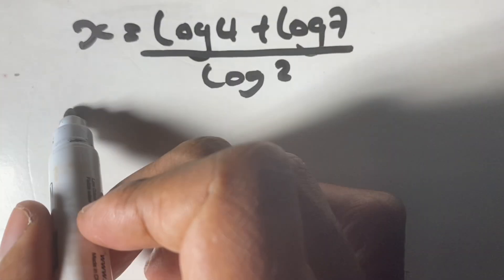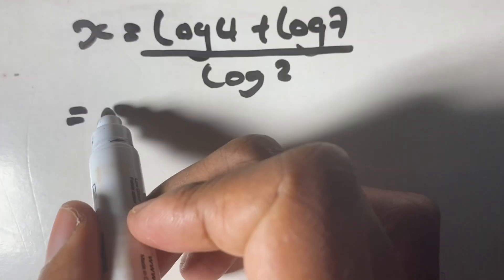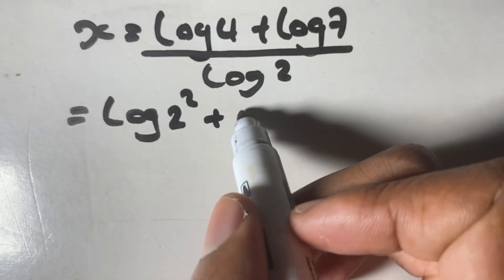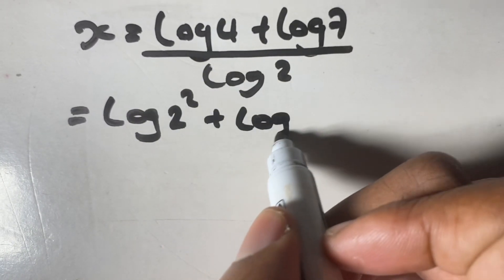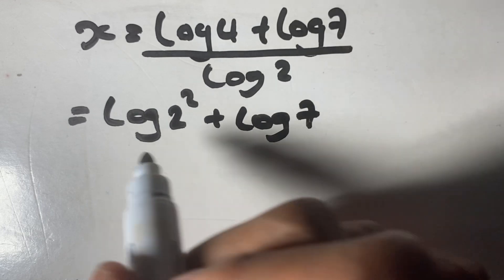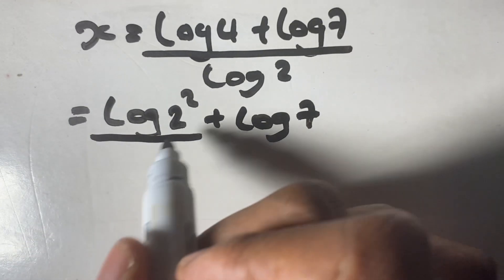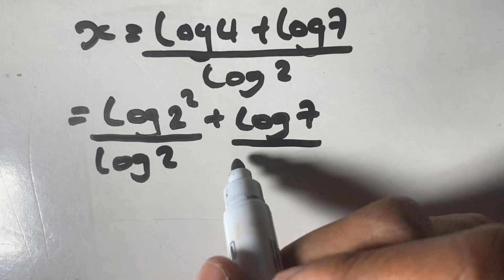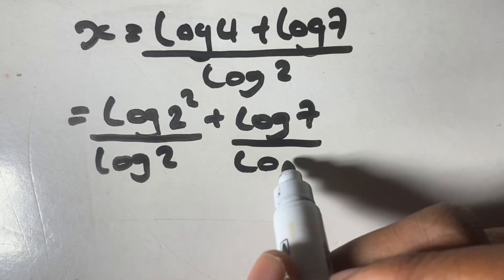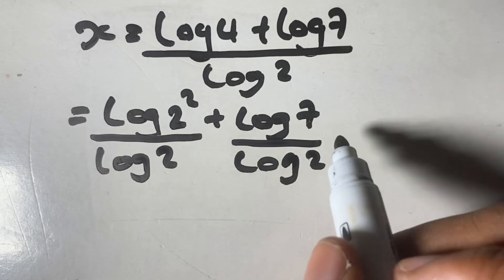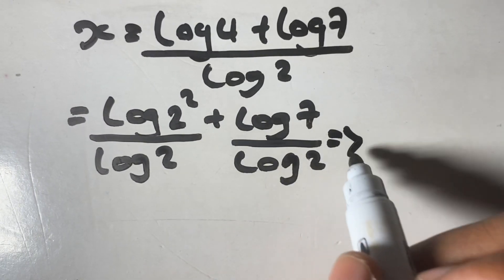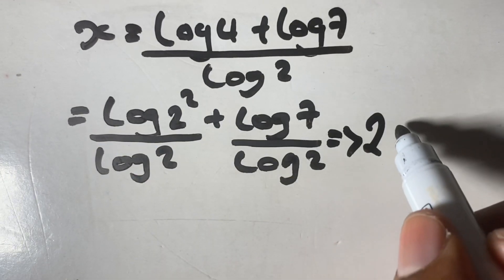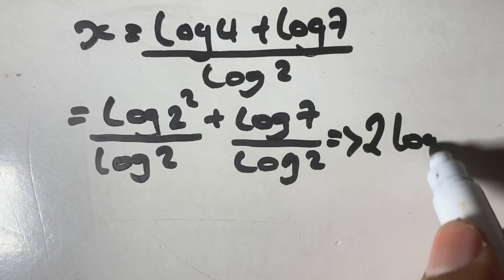We can simplify further where log 4 is equal to log 2 to the power of 2. Then we have plus log 7, and we divide both terms by log 2. So that's log 2 squared over log 2 plus log 7 over log 2. And we can express log 2 squared as 2 log 2.